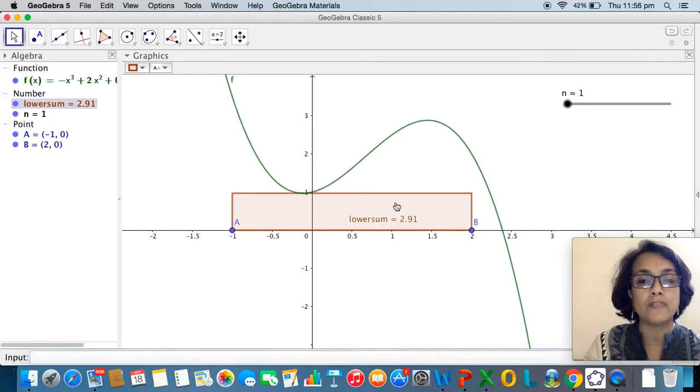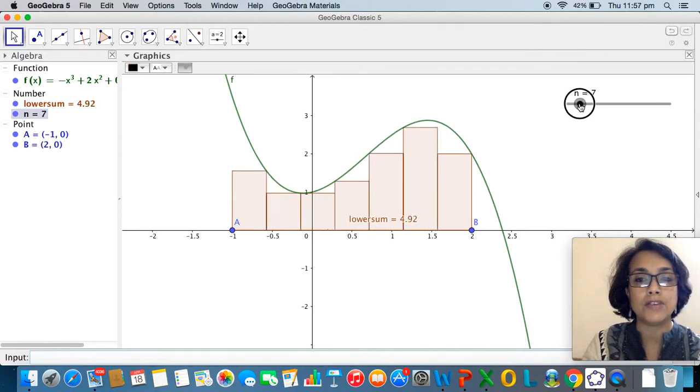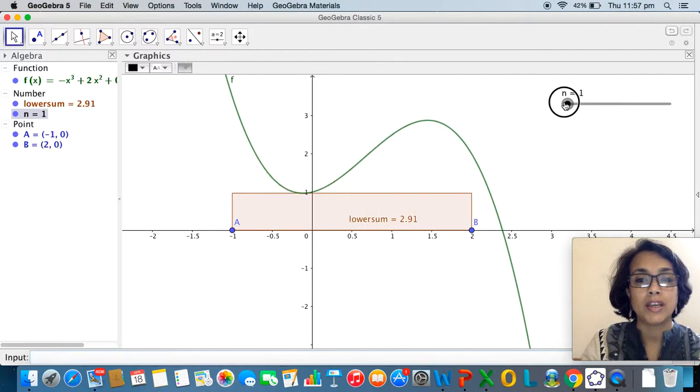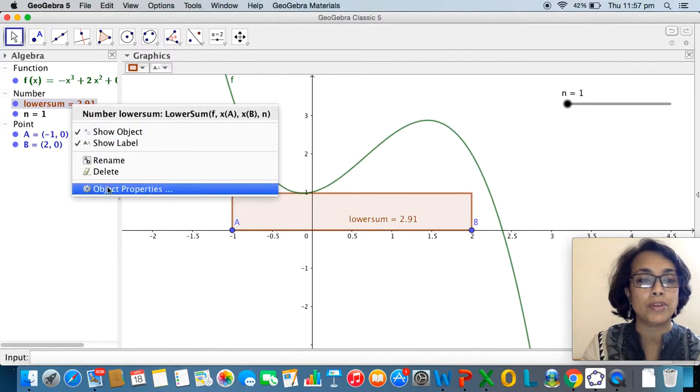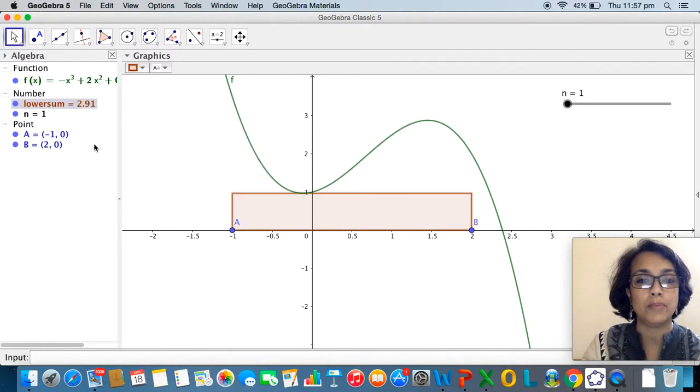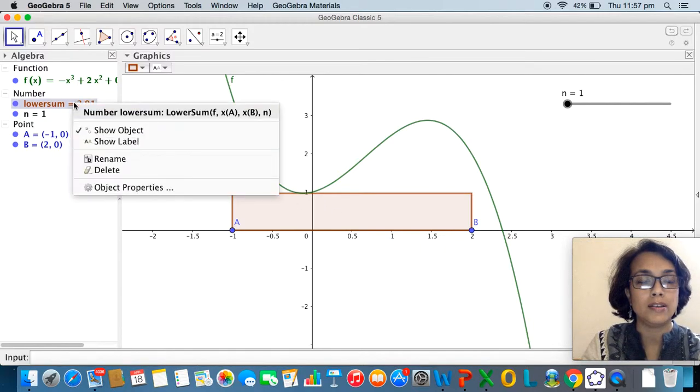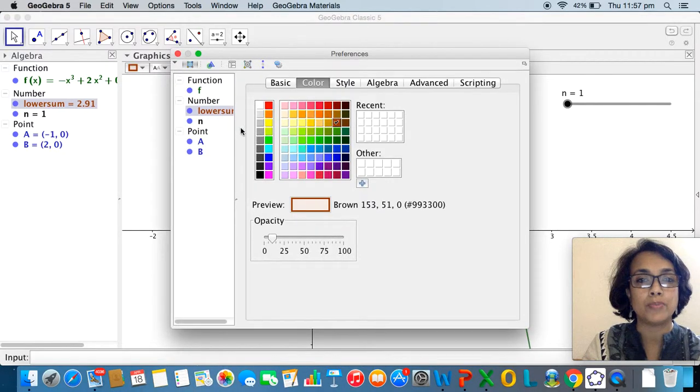When you do this observe that one rectangle has been created because my n value is 1, and this will increase as I drag my slider. But for now I would like to remove this label by right clicking on lower sum in the algebra window and untick show label, and I would also like to darken the rectangle by going to object properties and increasing the opacity.